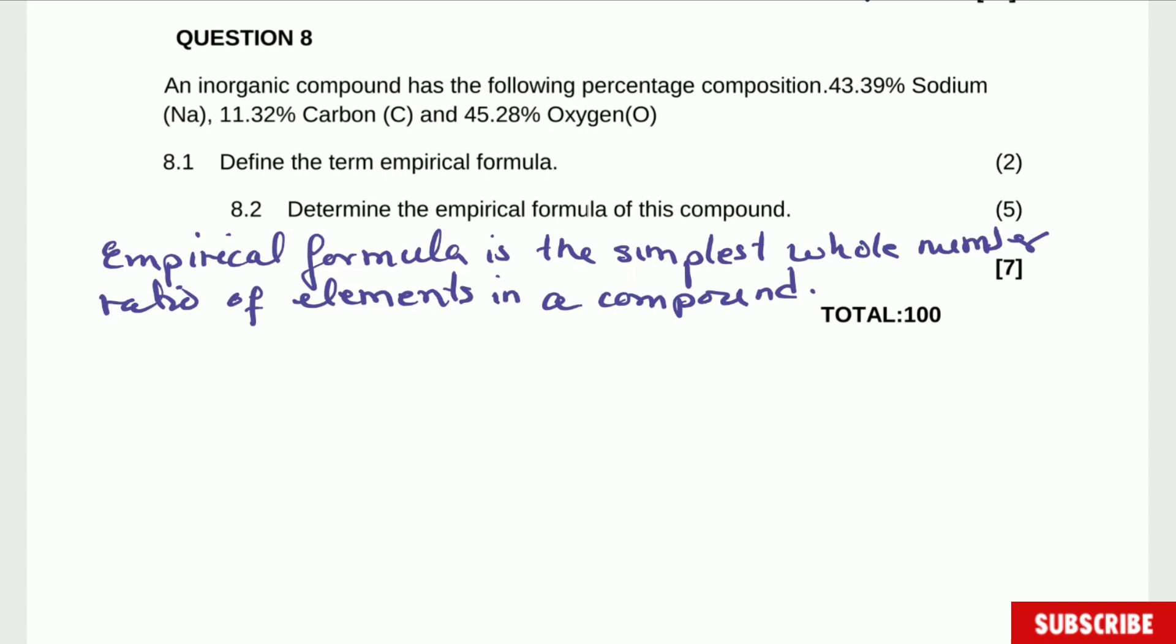And then what is empirical formula? Empirical formula is the simplest whole number ratio of elements in a compound and if you say that you get two marks.